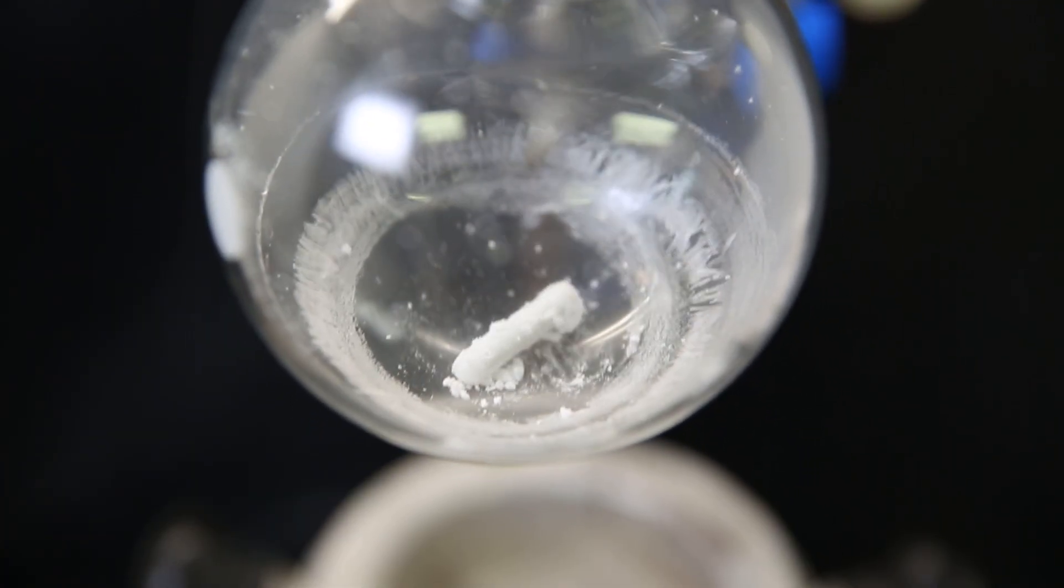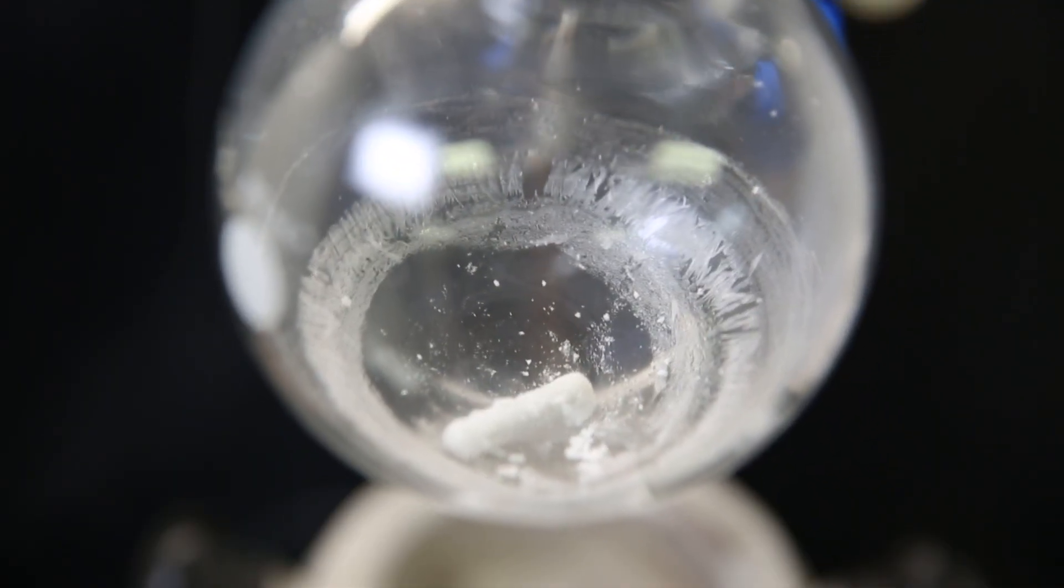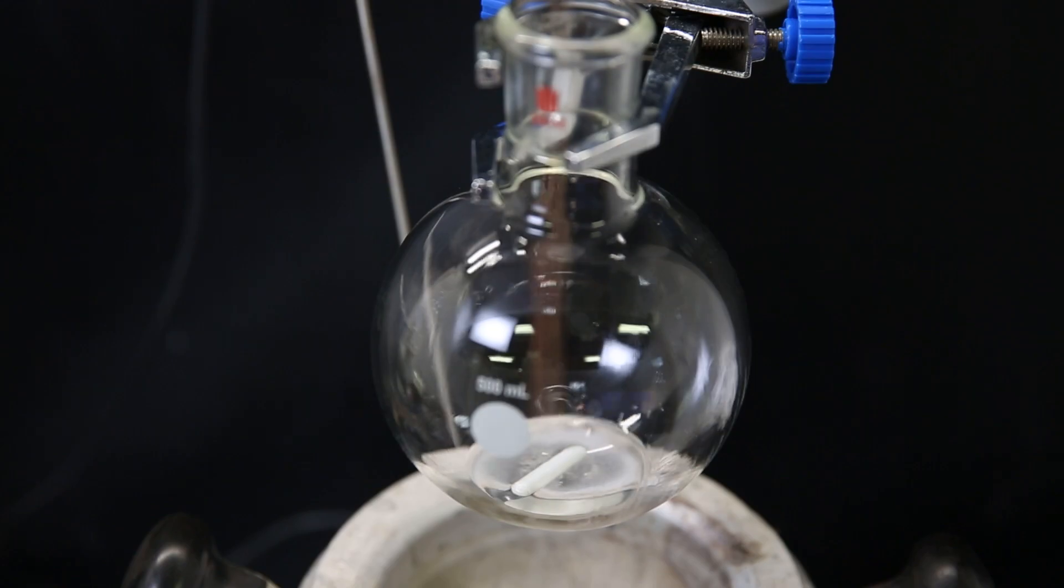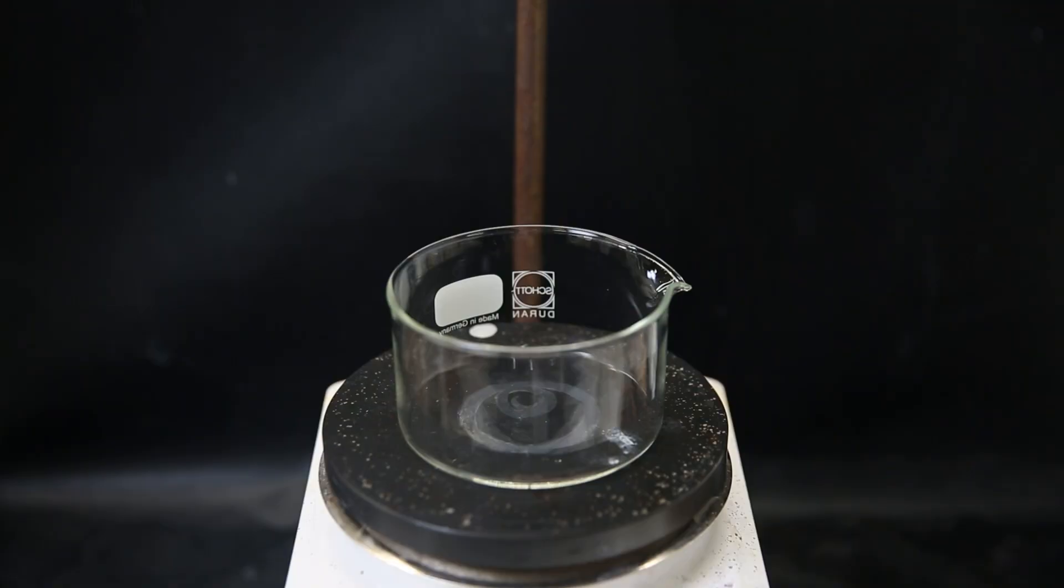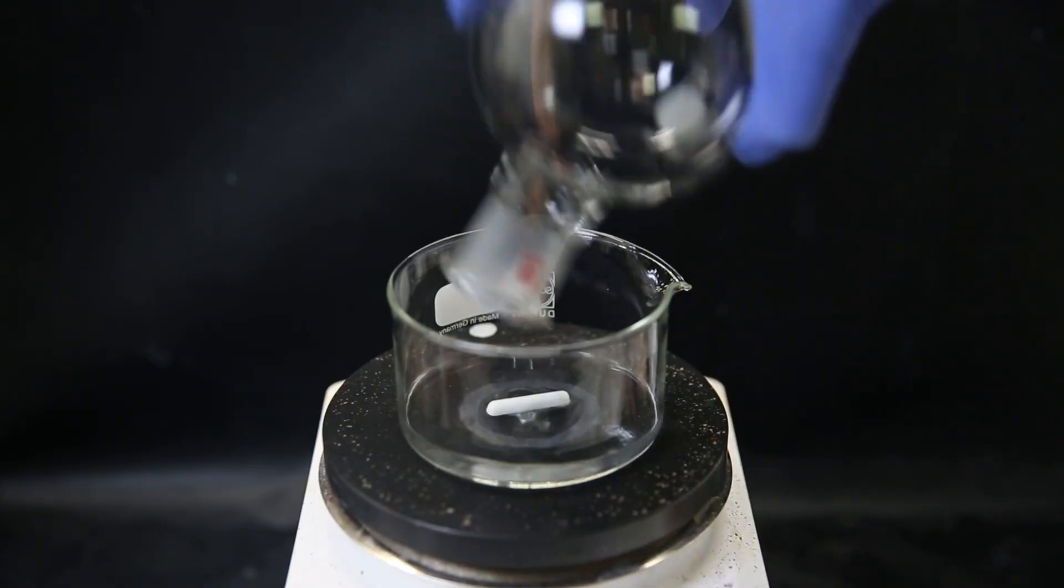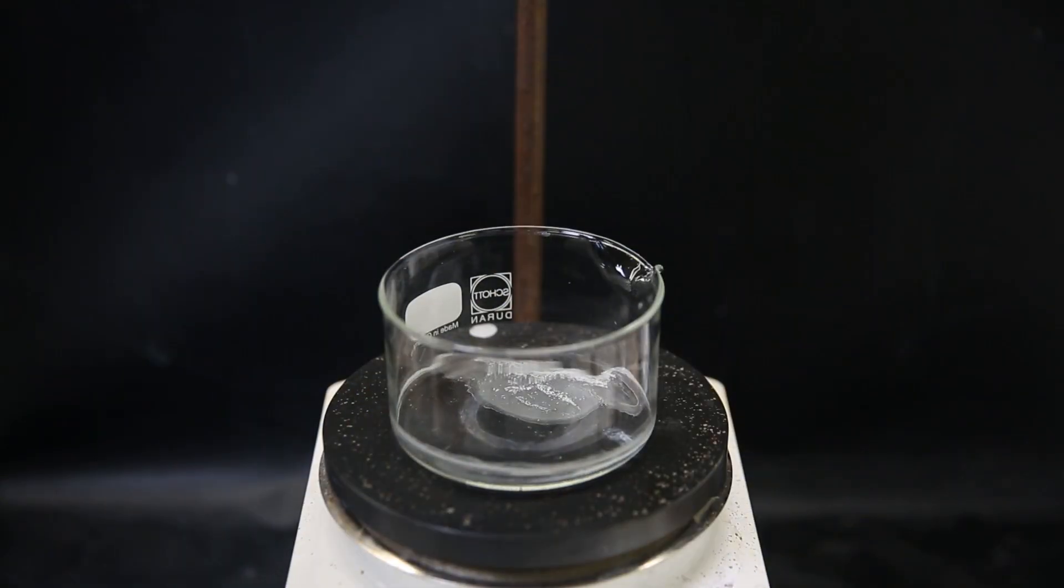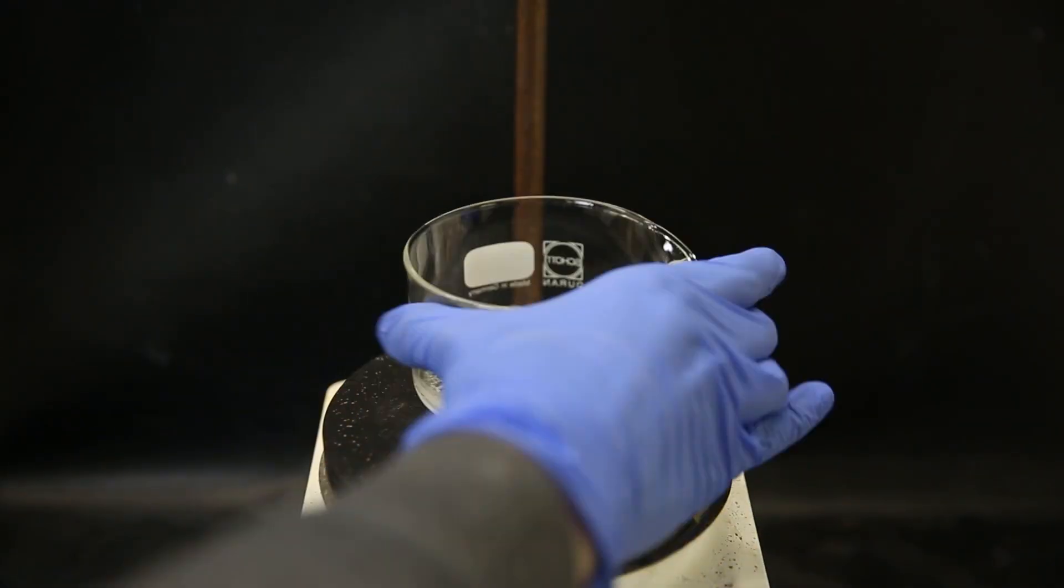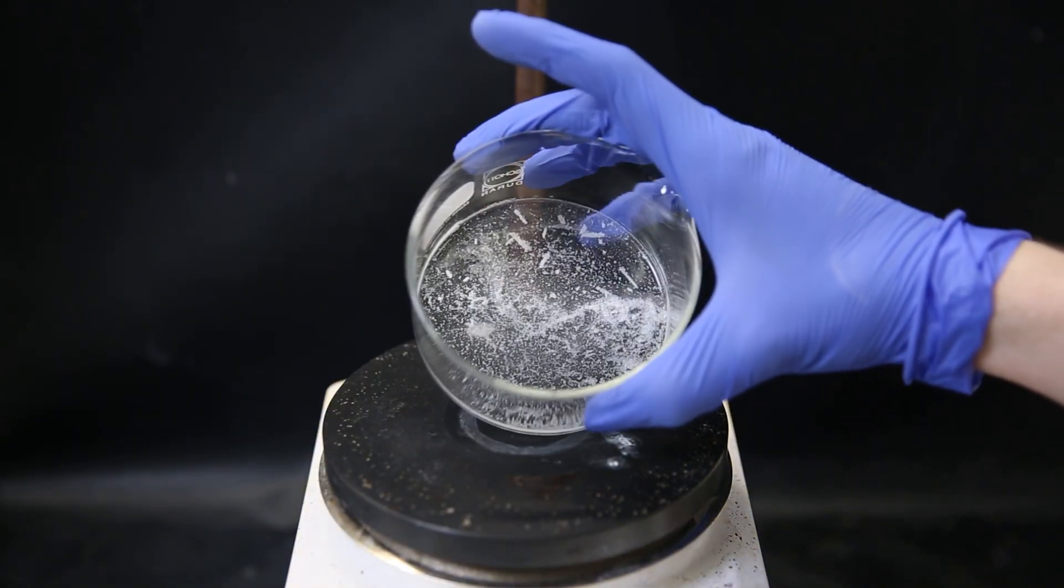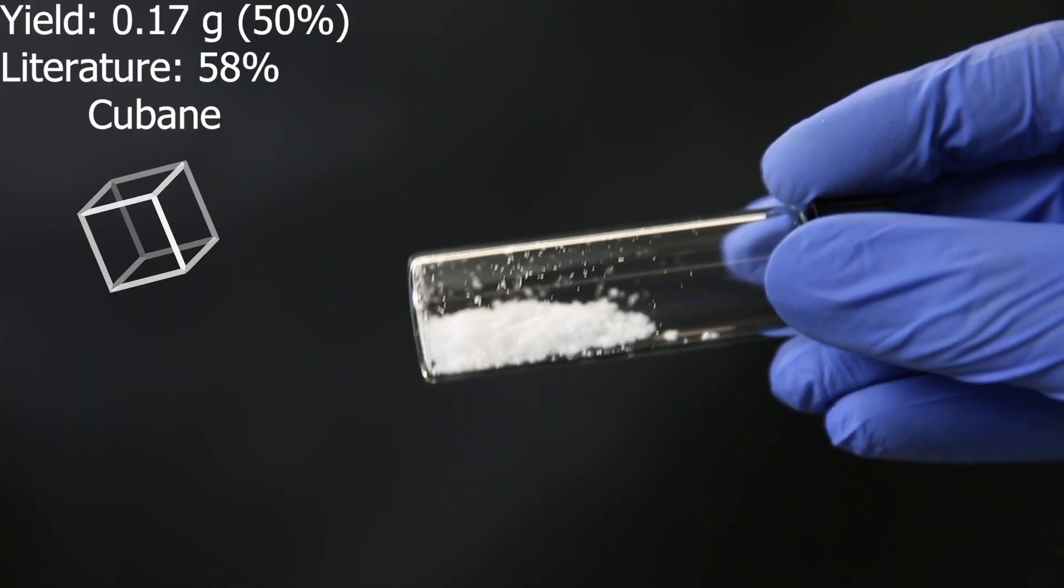Anyhow, we are left with a beautiful white solid, which should be pure cubane, but I need to get it out of the flask properly, so I dissolve it all back into some pentane. I then move all of the solution to a crystallizing dish and wash the flask a few times with a little bit of pentane. I now blast the dish with a heat gun so that all of the pentane evaporates away, and I am again left with some white solid. I scrape it all off and then move it to a vial.